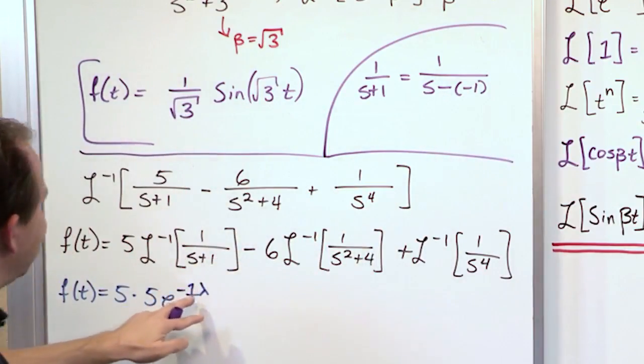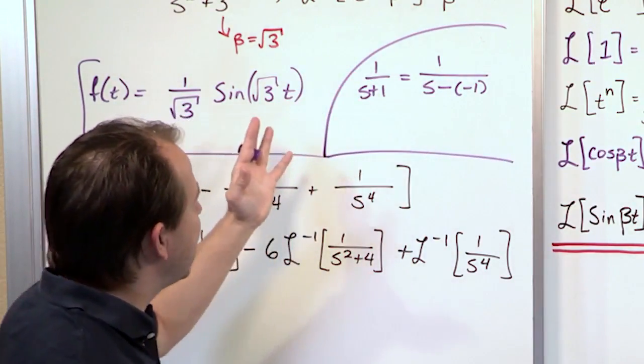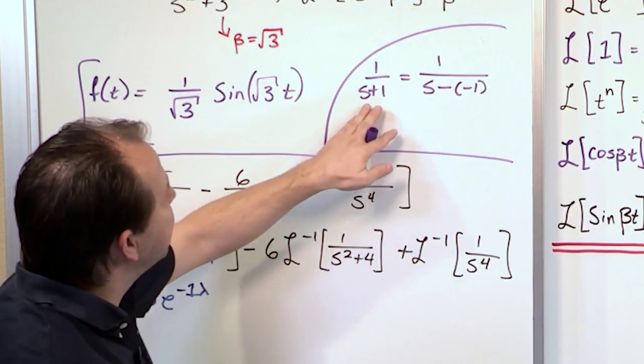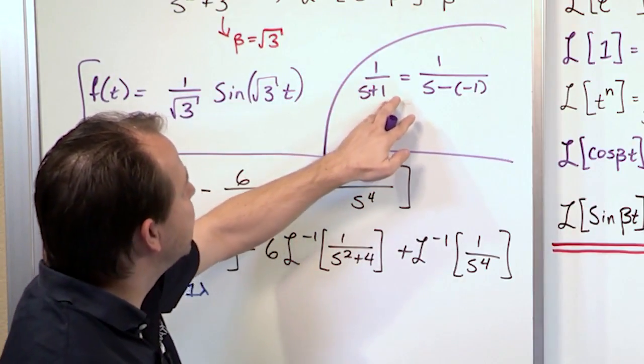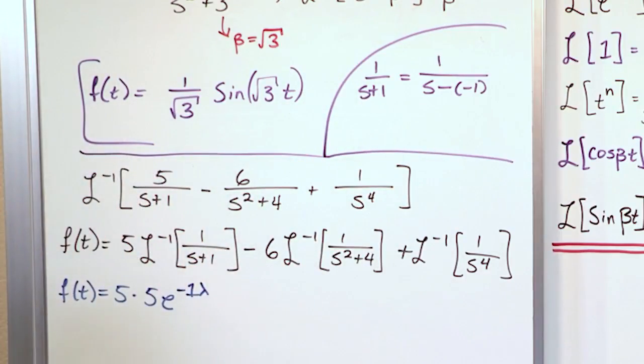Then the negative 1 is what gets stuck inside of the exponent. You don't have to do this every time. You'll get used to seeing it. Basically, if you see 1 over s minus lambda, the number goes in there. If you see 1 over s plus lambda, you need to stick a minus 1 up there.